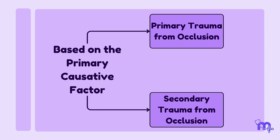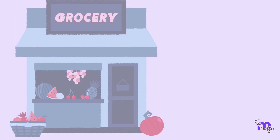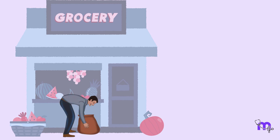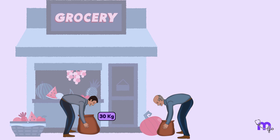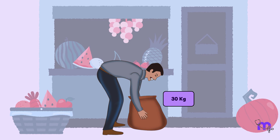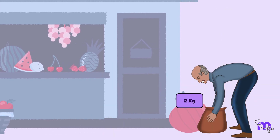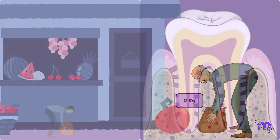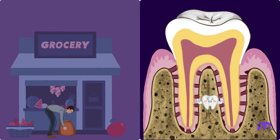Now, let's move on to the second classification of trauma from occlusion. Imagine a healthy young man trying to lift a 30 kg rice bag and a weak old man trying to lift a 2 kg rice bag. The young man, though healthy, is unable to lift the rice bag because the excess weight is beyond his lifting capacity. Just like the young healthy man, a healthy tooth also cannot take up abnormal forces falling onto it. This is called primary trauma from occlusion.